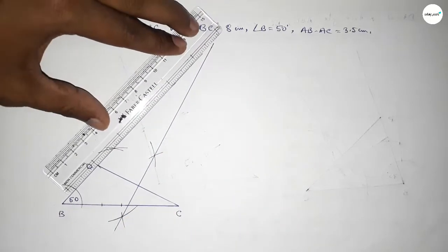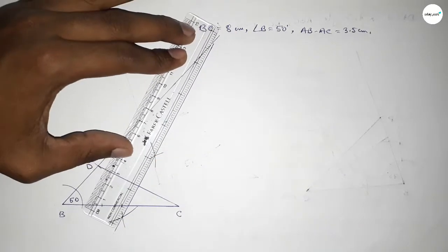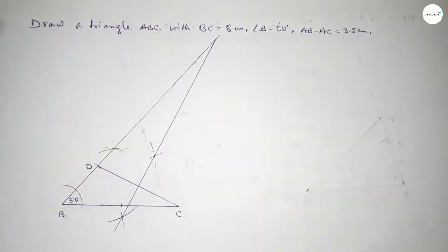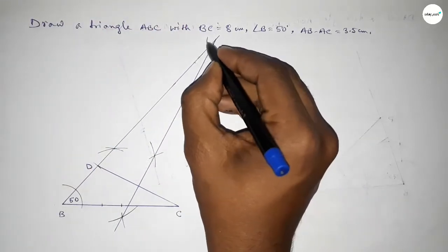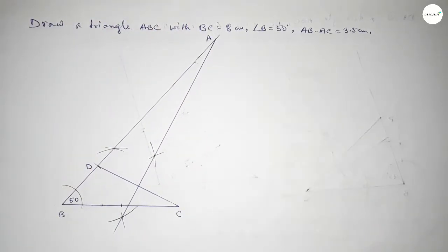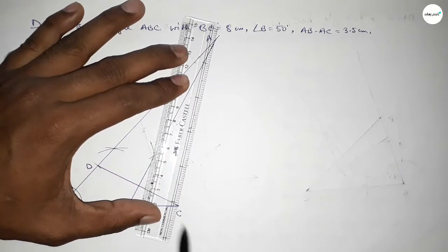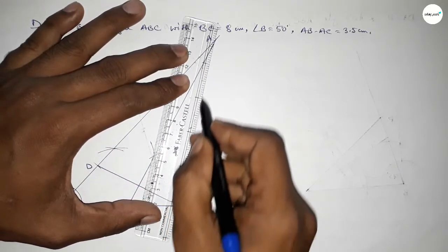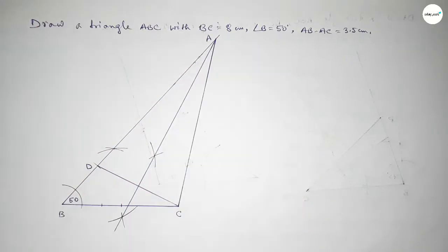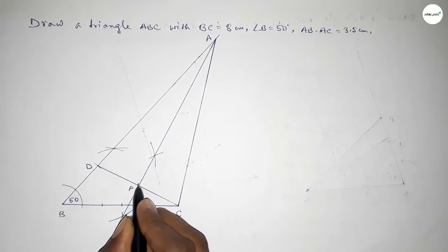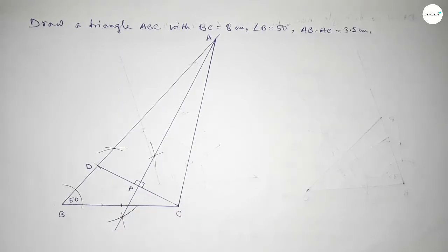Joining these two intersection points gives the perpendicular bisector of DC. We extend this bisector line, and also extend the angle ray from B, so both lines intersect at point A. Now joining A and C. Here P is the point where the bisector meets DC, and this angle is 90 degrees.